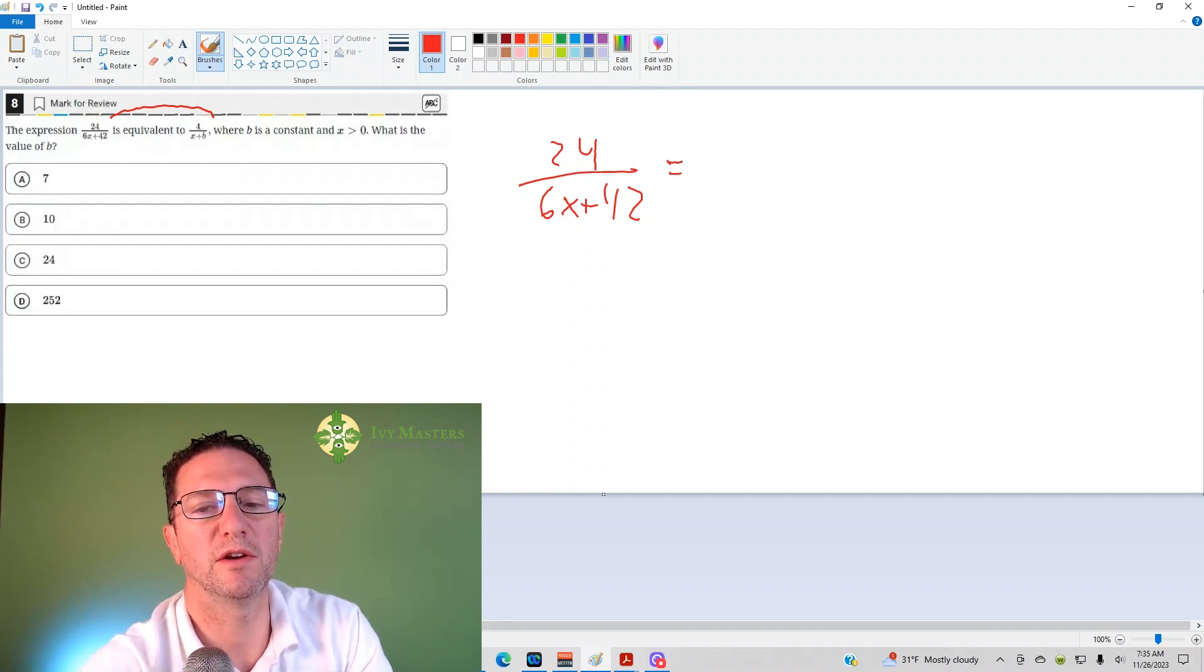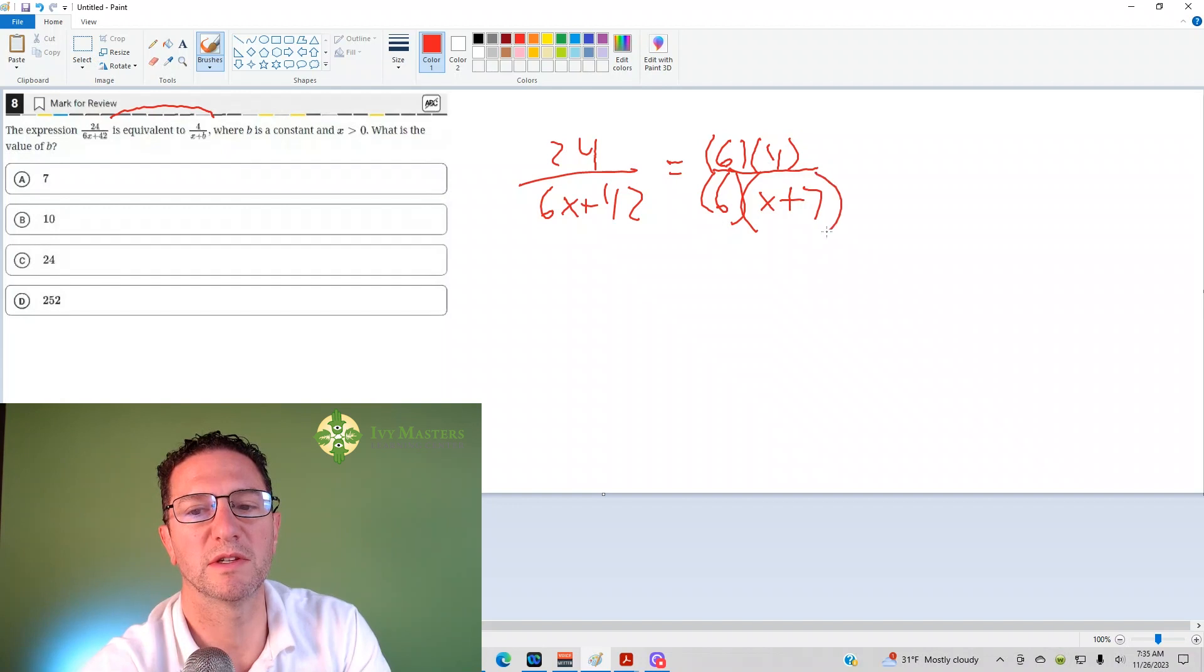Another way you can look at this is if I take a 6 out of the top and the bottom, then up top, what I'd wind up with is a 4. And the bottom, what I'd wind up with is x plus 7.